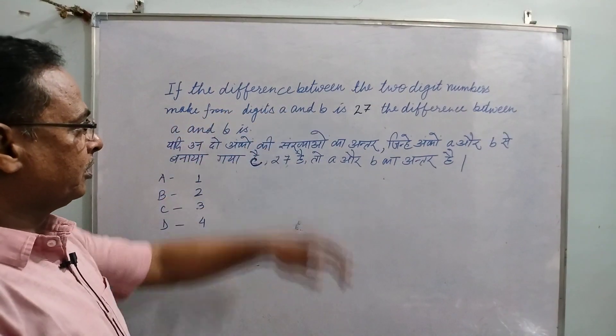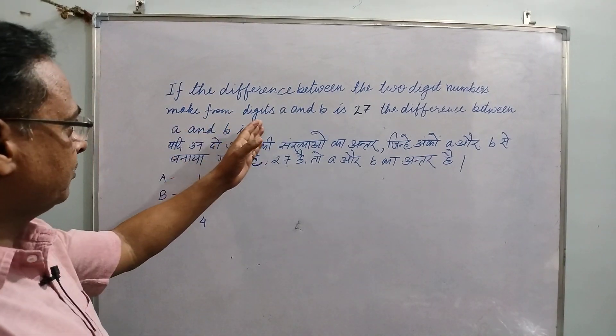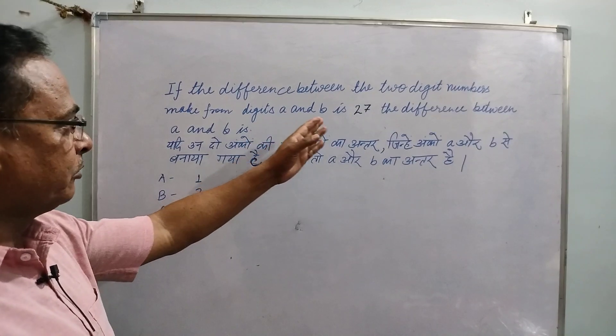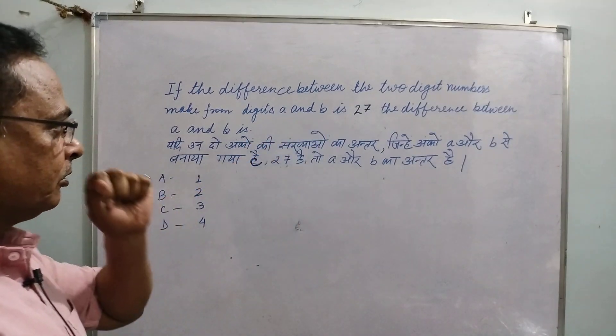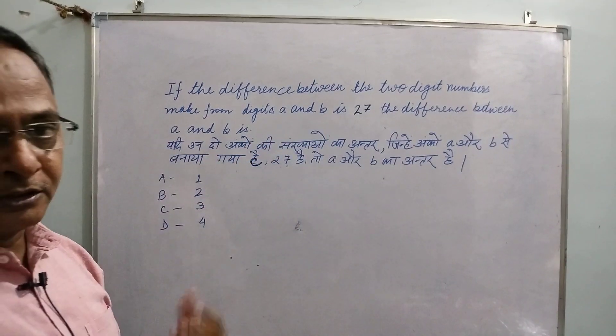The difference between the two-digit numbers made from digit A and B — the difference between A and B is...